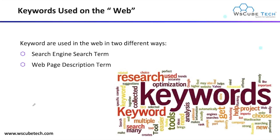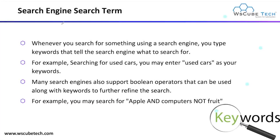There are two different ways to use keywords on the web. One is the search engine search term, and the other is the web page description term. In the case of a search engine search term, whenever you search for something using a search engine, you type a keyword that tells the search engine what to search for. For example, searching for a used car, you may enter 'used cars' as a keyword. Many search engines also support Boolean operators that can be used along with keywords to further refine the search.